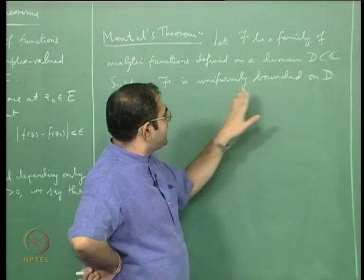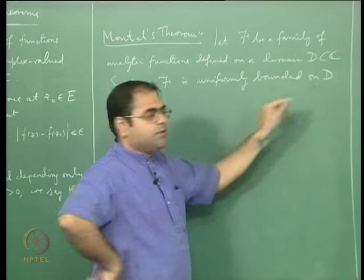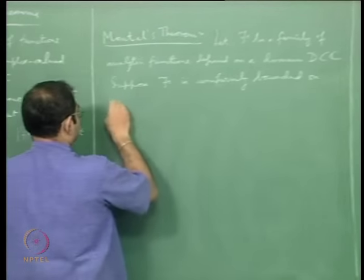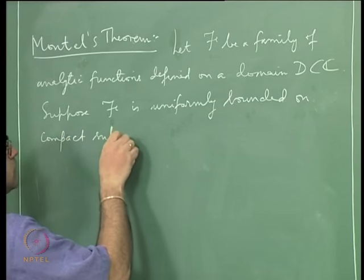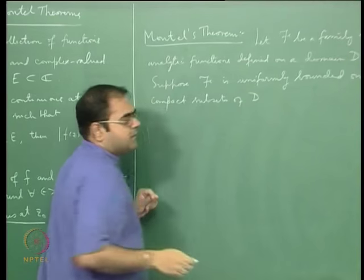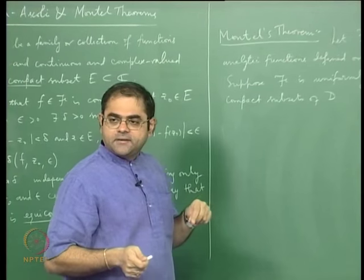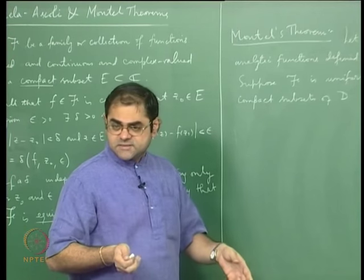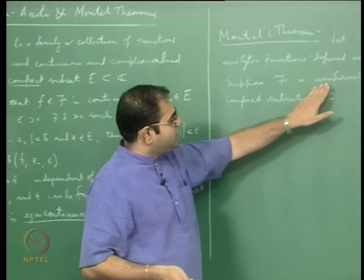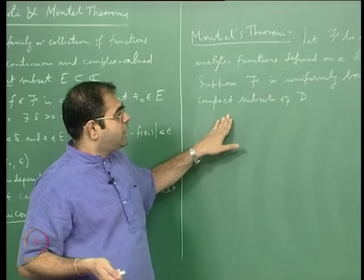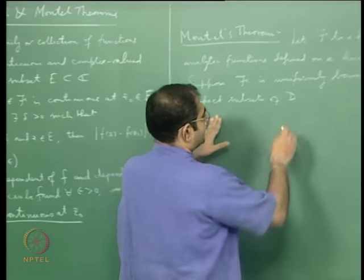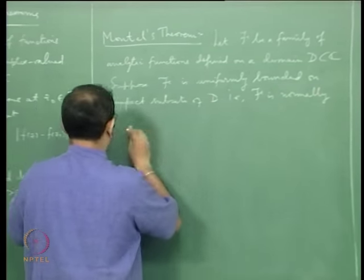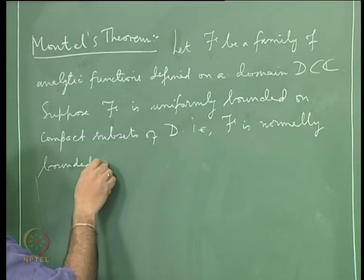You should modify this and say that it is uniformly bounded on compact subsets of the domain. So I will change this — this is too much — to: uniformly bounded on compact subsets of D. A property that holds on compact subsets is called a normal property. If you have convergence on compact subsets it is called normal convergence. So I can state it as: script-F is normally bounded on D.